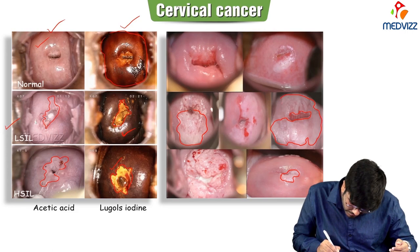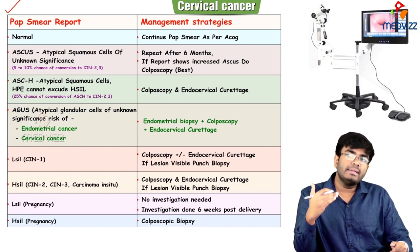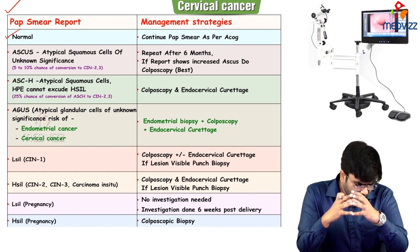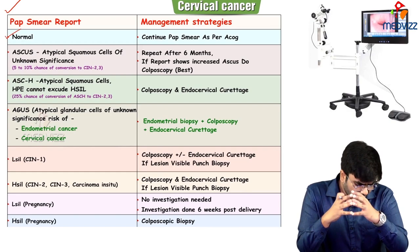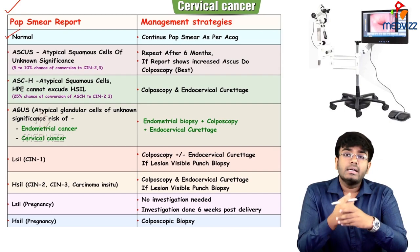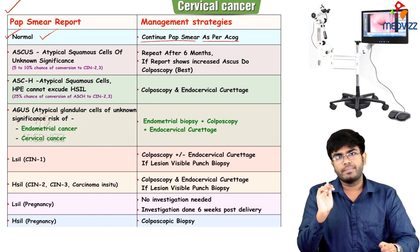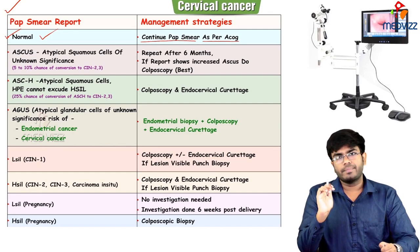To summarize the key management points: if Pap smear result is normal, repeat as per FIGO guidelines. If showing CIN1 — dysplastic cells in the lower one-third — go with colposcopy. Based on a Pap smear alone, you shouldn't treat. You have to confirm with a more confirmatory test and biopsy — go with colposcopy.